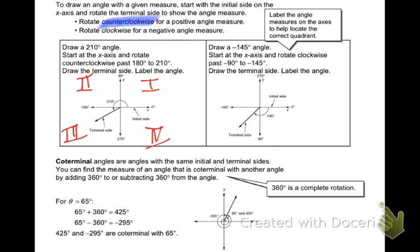A 90-degree rotation gets us to the y-axis. 180 gets us all the way to a straight line. 270 brings us back to the y-axis again. Going all the way around is 360 degrees because it makes a whole circle. We go counterclockwise for a positive angle measure, and clockwise when it shows a negative measure — you just go the other way.